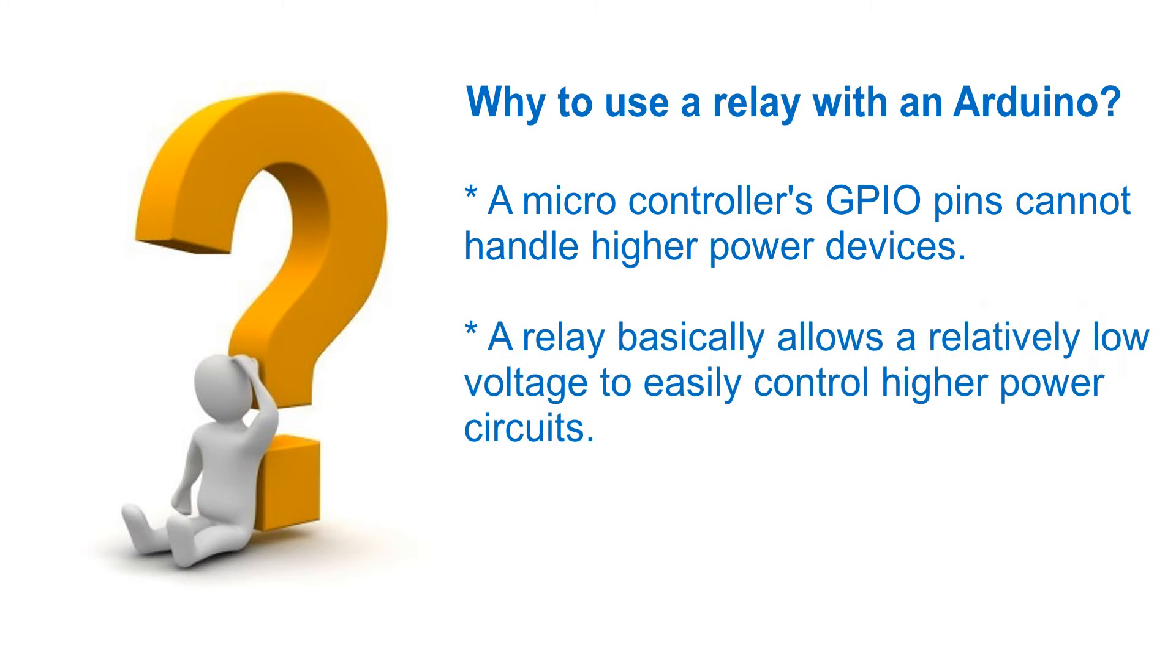You can use a 5-volt relay to switch a 120 or 220-volt device and use an Arduino to control the relay. A relay basically allows a relatively low voltage to easily control higher power circuits. A relay accomplishes this by using 5-volt outputted from an Arduino pin to energize the electromagnet, which in turn closes an internal physical switch to turn on or off a high power circuit.